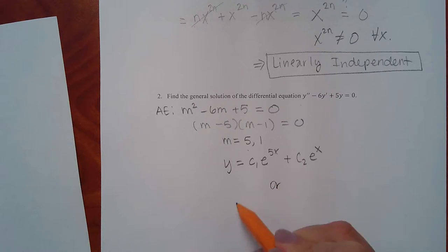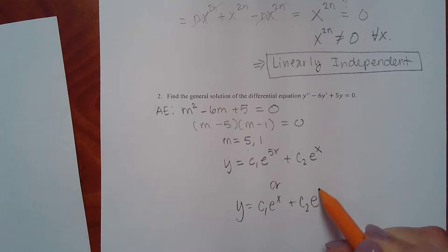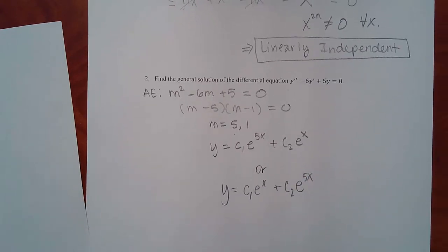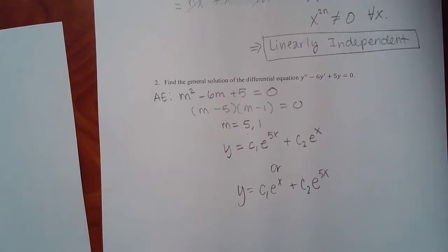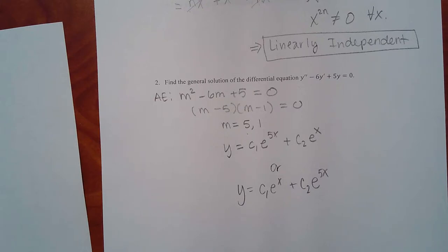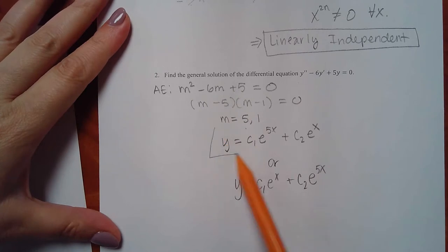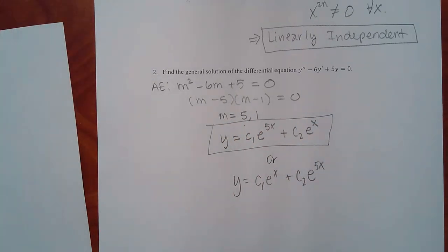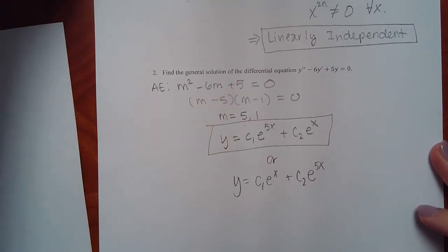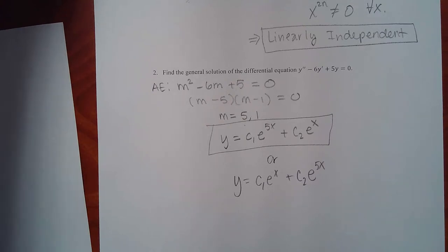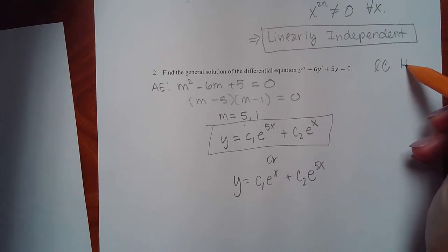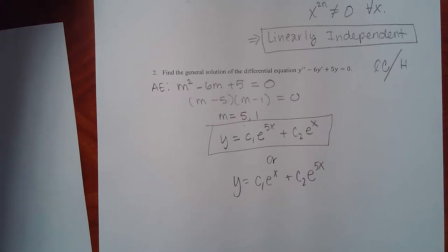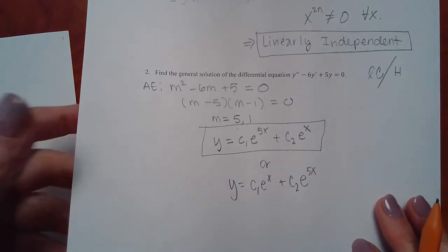Another possible answer could switch the order — putting the one in front of the five — but that's the same thing. Equivalent answers are accepted. Once you identify distinct real roots, you're done. You could also have gotten repeated roots or complex roots. But expect at least one constant coefficient homogeneous problem — which case you get just depends on what it looks like after factoring.